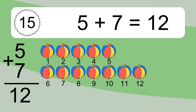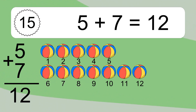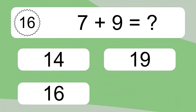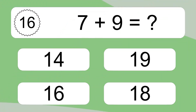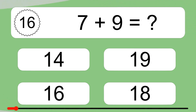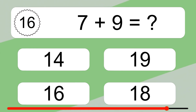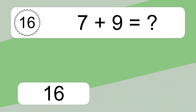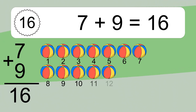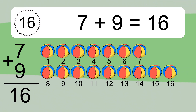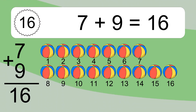7 plus 9 equals what? 7 plus 9 equals 16. Let's count it. 1, 2, 3, 4, 5, 6, 7, 8, 9, 10, 11, 12, 13, 14, 15, 16.